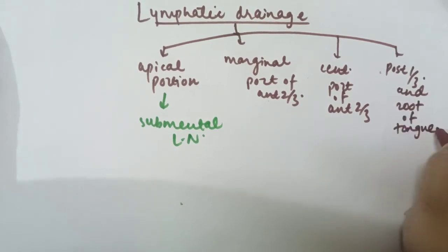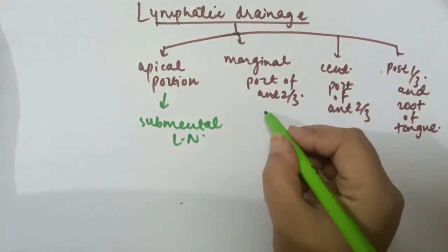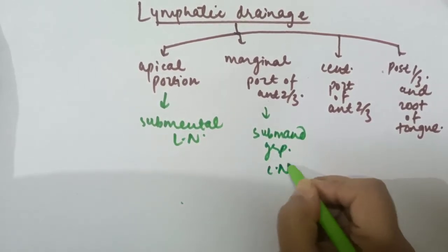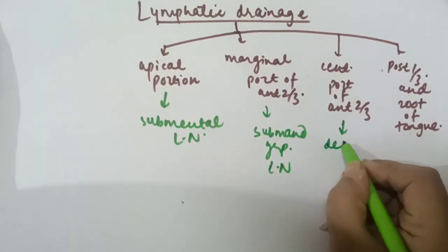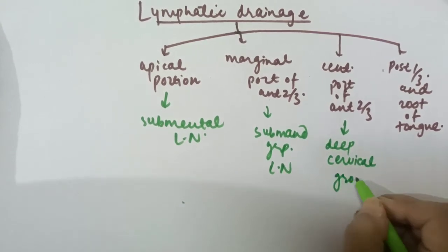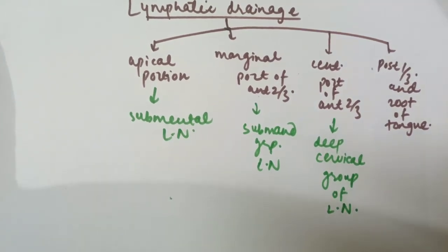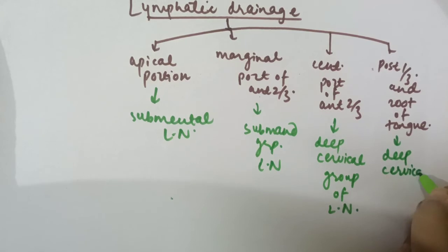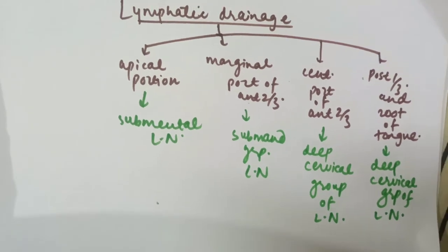From the apical portion, lymph drains to the submental lymph nodes. From the marginal portion of the anterior two-third, it drains into the submandibular group of lymph nodes. The central portion of the anterior two-third drains into the deep cervical group of lymph nodes. The posterior one-third and the root of the tongue both drain into the deep cervical group of lymph nodes.